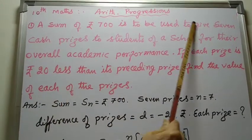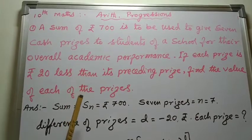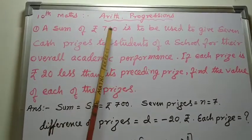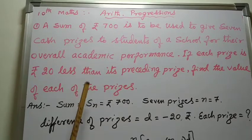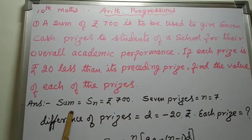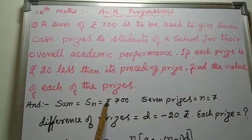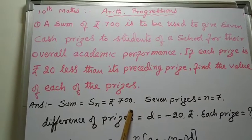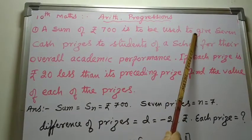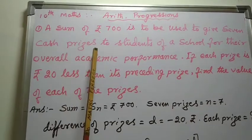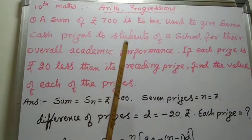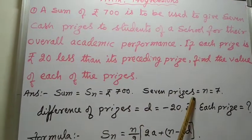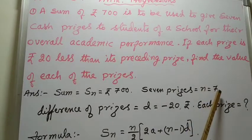After reading the problem, analyze what are the given points. A sum of Rs. 700, Sn is given. Sum means Sn is equal to 700. Second, give 7 cash prizes. Number of prizes given, 7 prizes means n equal to 7.